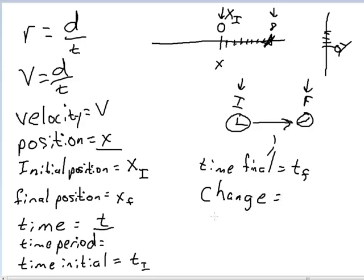Anytime we talk about the change in something, we're going to use this symbol here to indicate it. It looks like a triangle. It is a triangle, but it's also the Greek letter delta. We're going to replace the word change in our equations with this delta. So if I want to know what was the change in position, how much did my position change from one point to another, I'm going to use the symbol delta x.